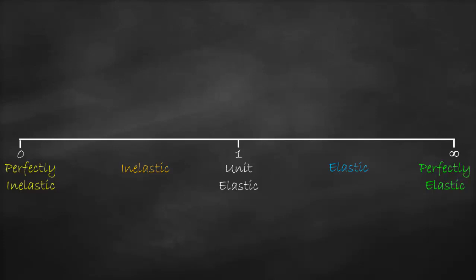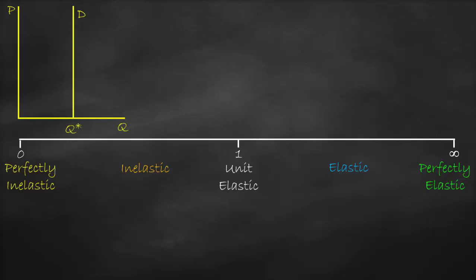Perfectly inelastic means irresponsive — the percent change in quantity demanded doesn't respond to any percent change in price. If we draw this on a graph, with quantity on the horizontal axis and price on the vertical axis, the demand curve will be vertical. It's vertical because we consume the same quantity whether the price goes up or down. That's why it's called perfectly inelastic.